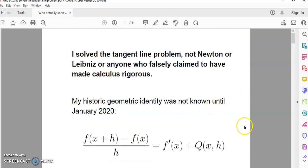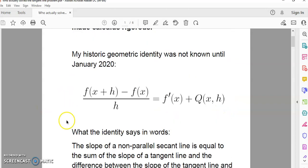So who actually solved the tangent line problem? Was it Newton? Was it Leibniz? Was it Cauchy? Was it somebody who came after them? Actually, it was none of them. It was I, John Gabriel, who solved the tangent line problem rigorously. Neither Newton nor Leibniz nor anyone else understood the geometric identity and had no clue that there is no need for limit theory or infinity or infinitesimals in the formulation of calculus.